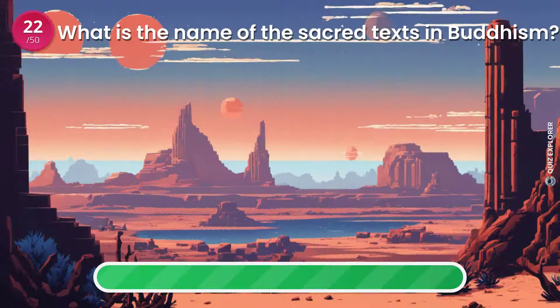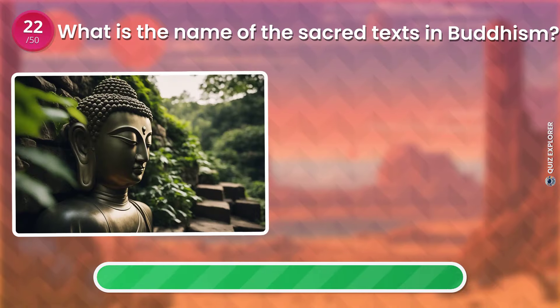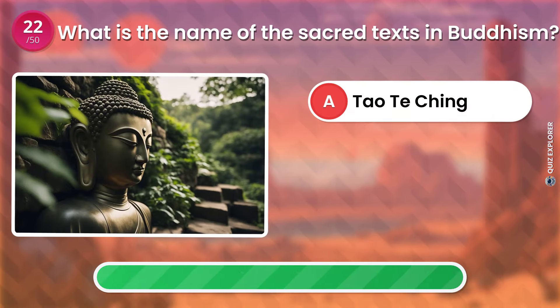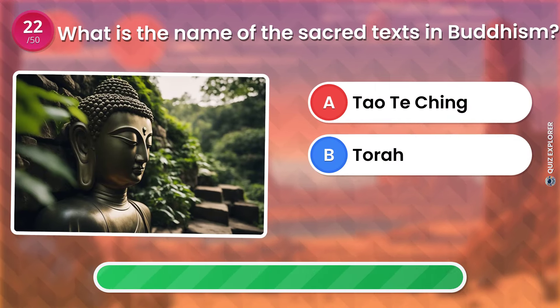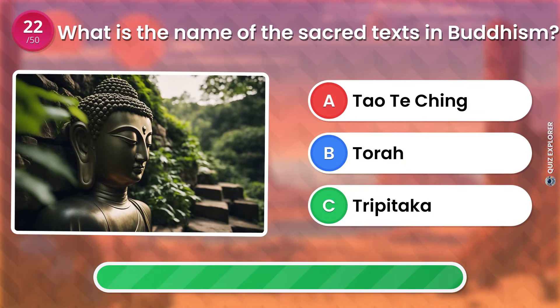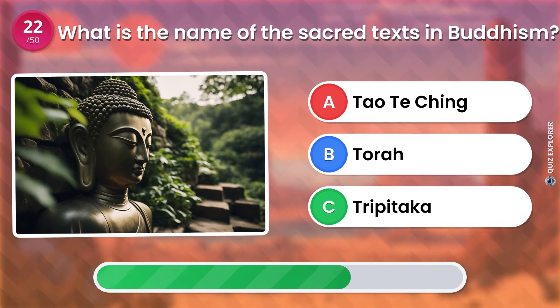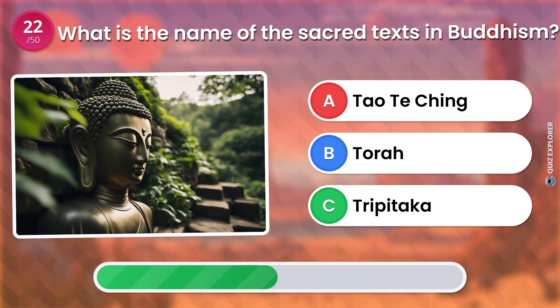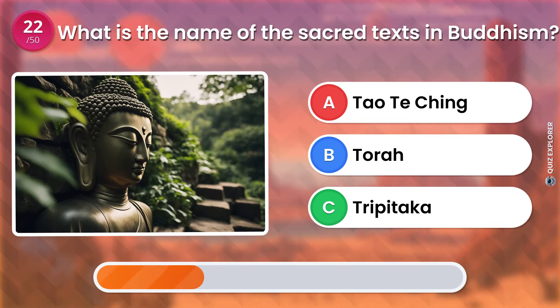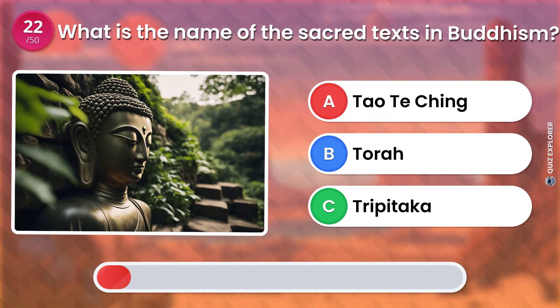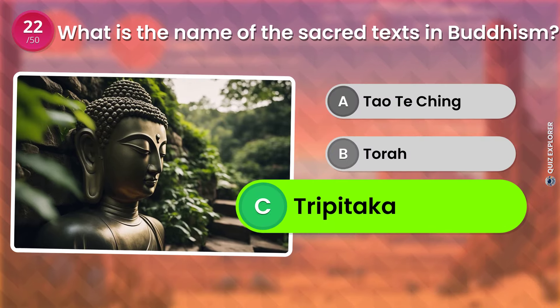What is the name of the sacred texts in Buddhism? Tao Te Ching. Torah. Tripitaka. The answer is: Tripitaka.